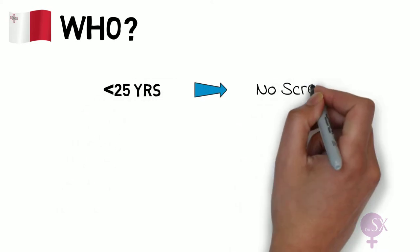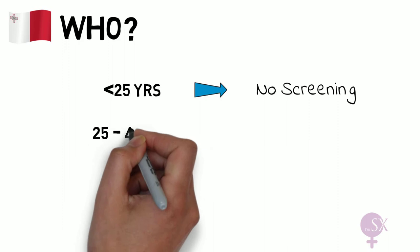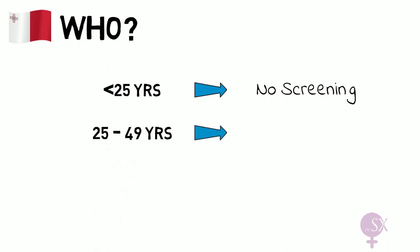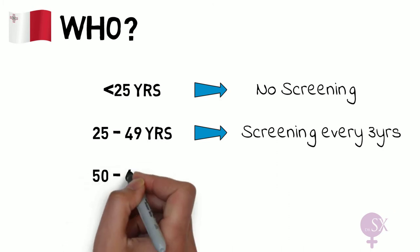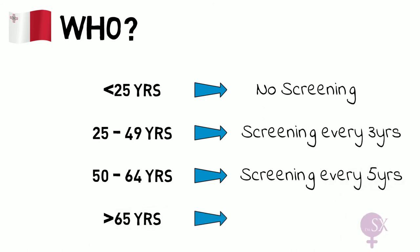Back to screening — in this video I'm going to be discussing the Maltese cervical screening program. Under 25 year olds are not offered screening; the rationale is that the younger population is more likely to fight off HPV due to their better immune system. Women between 25 and 49 years of age are offered screening every three years. Women between 50 and 64 years of age are offered screening every five years. Women above 65 are not offered screening because the risk declined significantly above this age group.